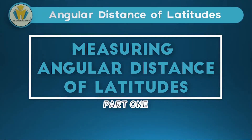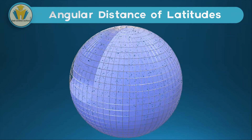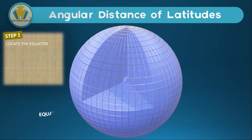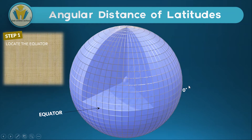The first part of this lesson is looking at angular distances of latitudes. There are some things we need to take note. The first step to finding an angular distance is locating our equator. In this diagram the equator has been shown through this label here and this arrow, but mostly in questions it will come as zero degrees, indicated by the side of the diagram — usually a diagram looking like a sphere — and we'll have our zero degrees on one of the latitudes.